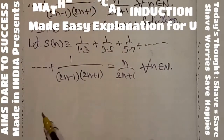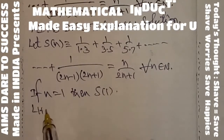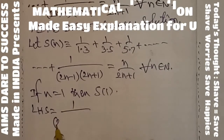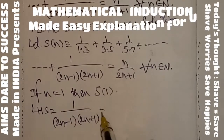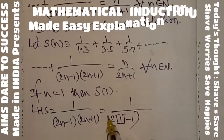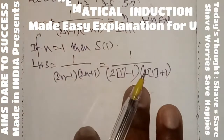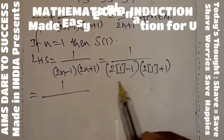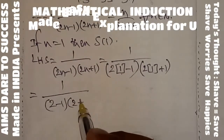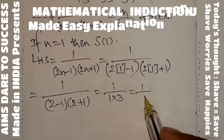First step: if n = 1, then S(1). Take LHS. LHS means the nth term of this question, that is 1/((2n−1)(2n+1)). Here substitute n = 1, that is 1/((2×1−1)(2×1+1)). After simplification: 1/((2−1)(2+1)) = 1/(1×3) = 1/3.